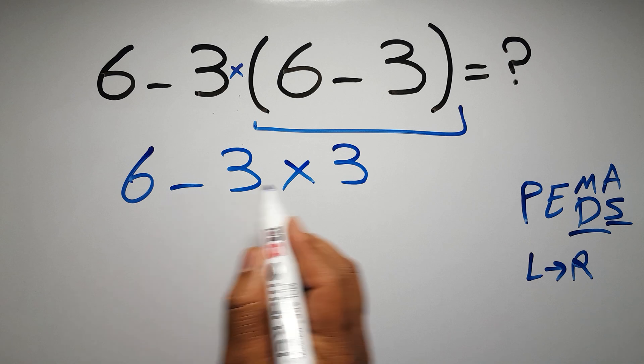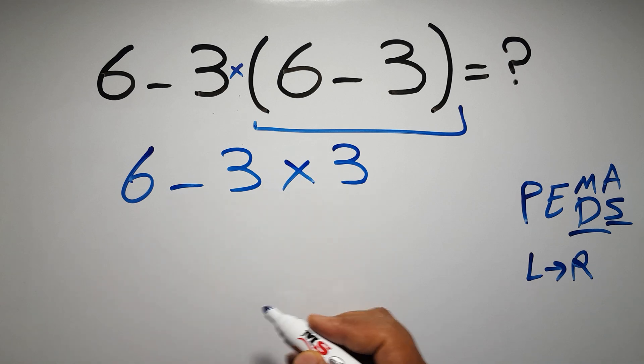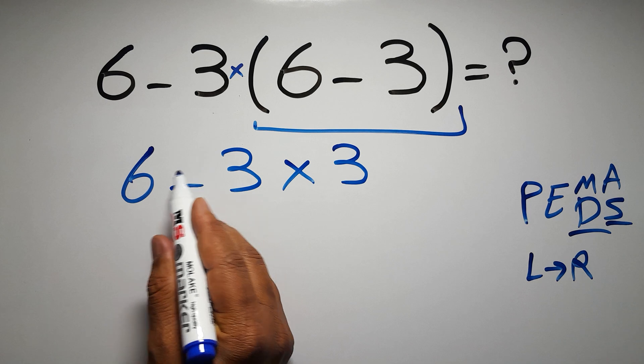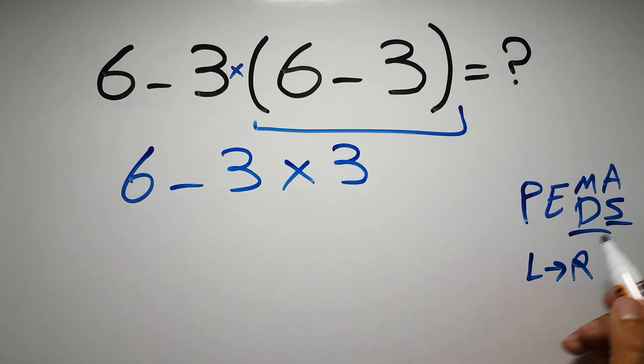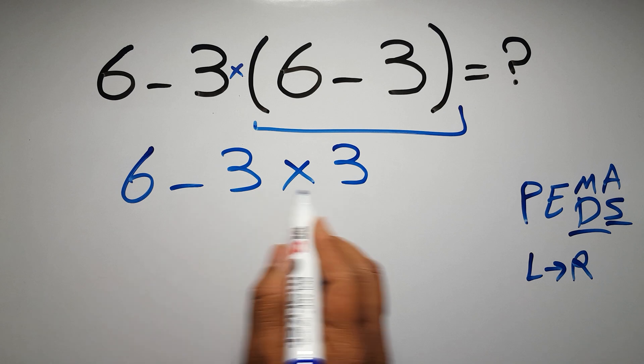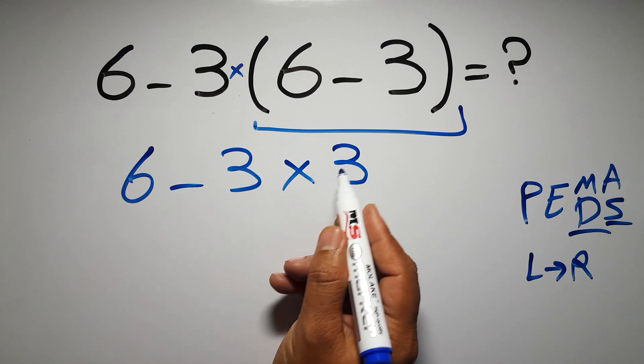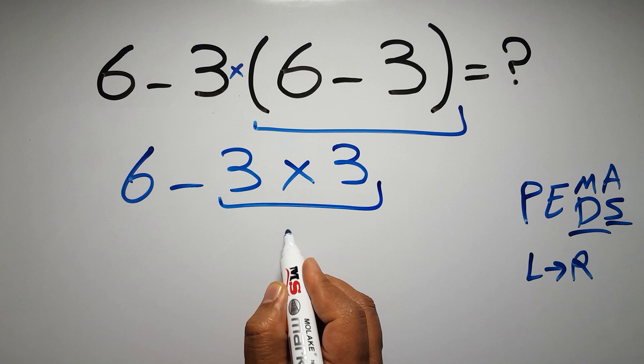Now we have 1 subtraction and 1 multiplication. According to the PEMDAS, multiplication has higher priority than subtraction, because multiplication comes before subtraction. So here, first we have to do this multiplication. 3 times 3 is just 9.